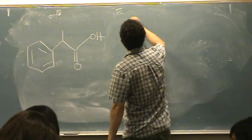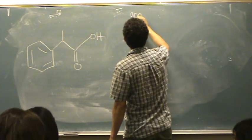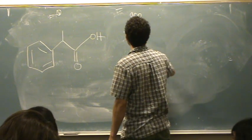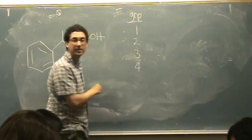And to do hybridization, basically, what I essentially do in my head is I count the groups. One, two, three, and four on the given carbon.